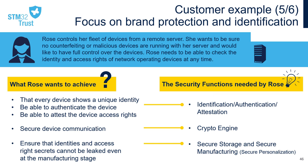In our fifth example, Rose controls her fleet of devices from a remote server. She wants to be sure no counterfeiting or malicious devices are running with her server and would like to have full control over the devices. To achieve this, Rose needs to protect her devices by checking their genuineness with unique identities securely personalized during manufacturing. She also needs to check the access rights of the remote server operating the devices.